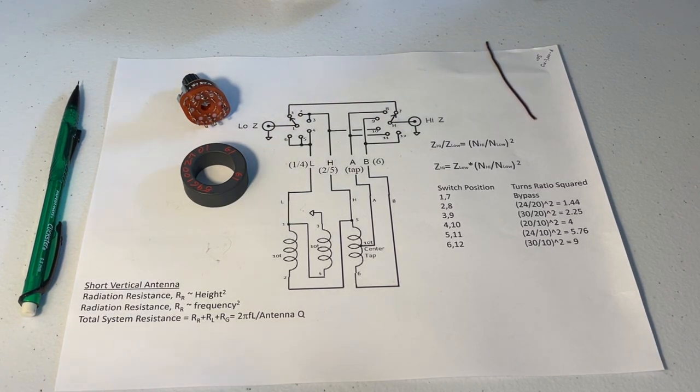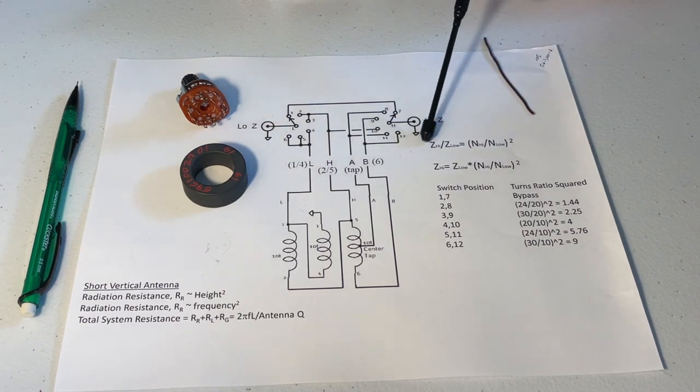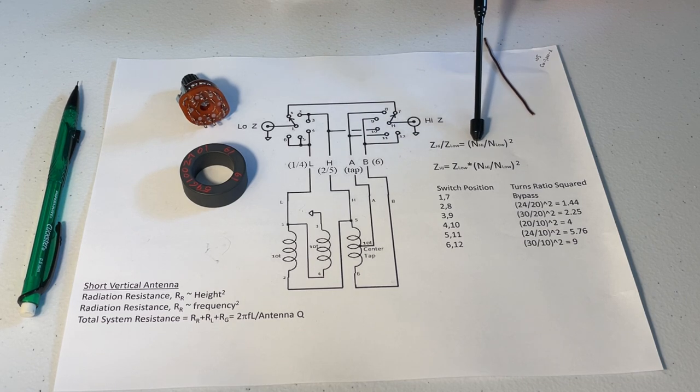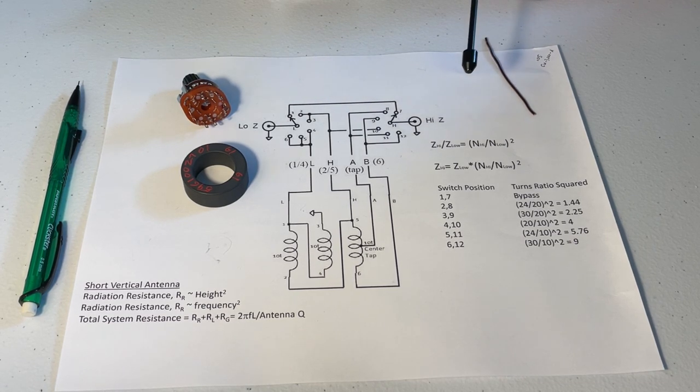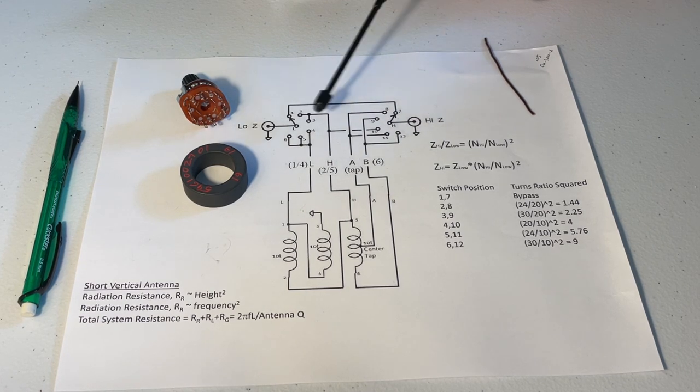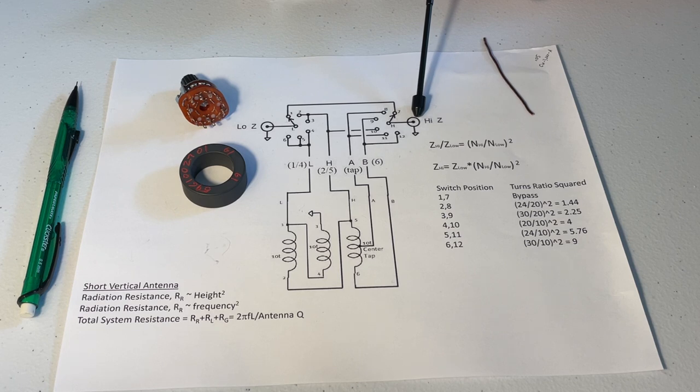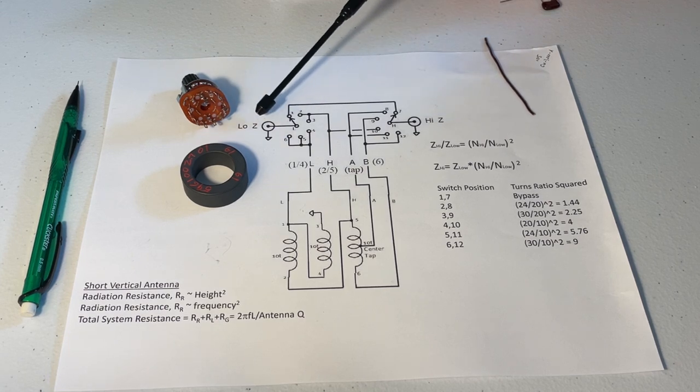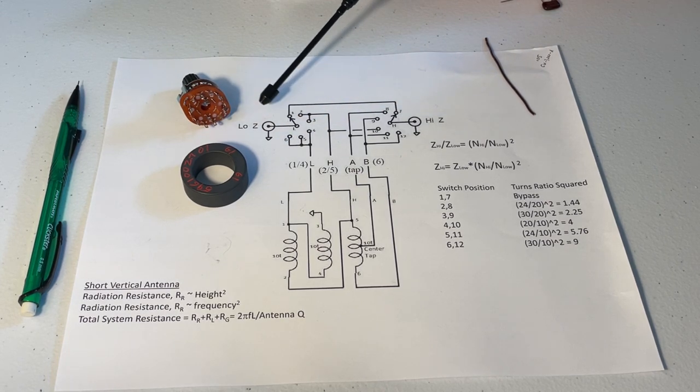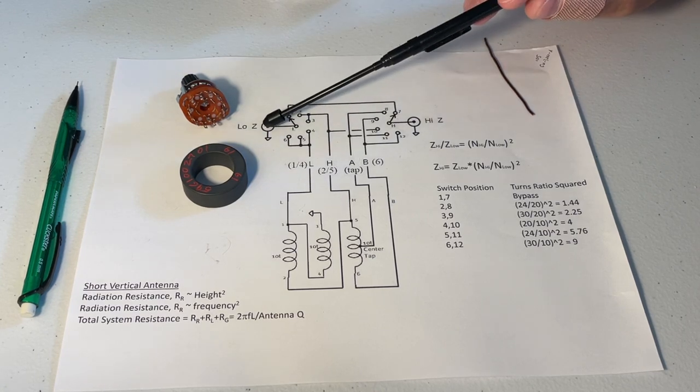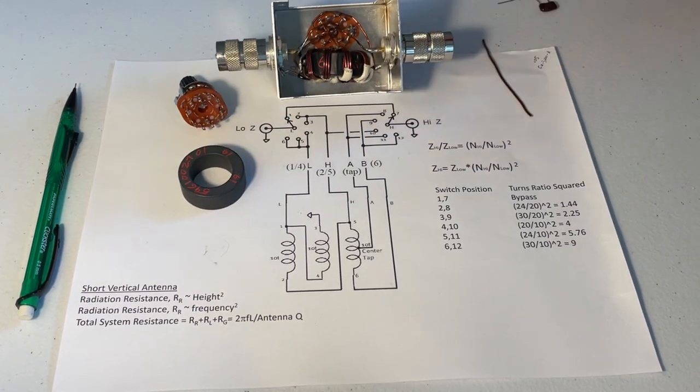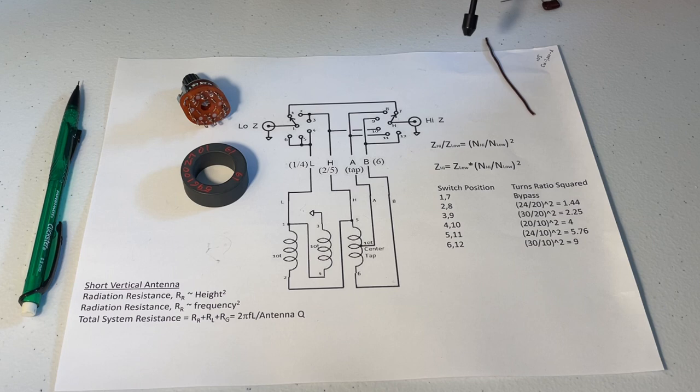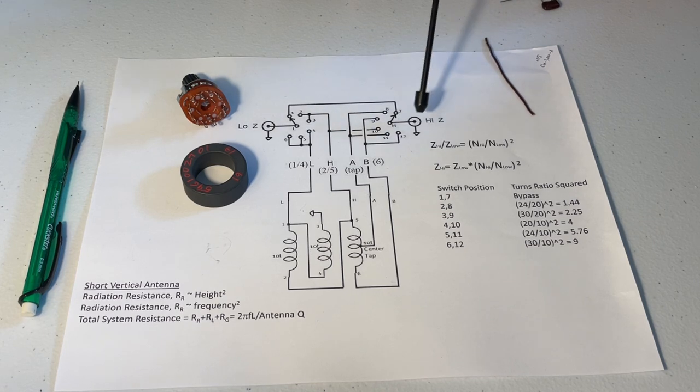So if we want to know what the impedance transformation ratio is, we know that the impedance ratio is equal to the turns ratio squared. So the impedance on the high side to the impedance on the low side is the number of turns on the high side to the number of turns on the low side squared. For instance, in position one, we're connecting this where the low impedance side of this transformer is hooked up to the antenna input, and then the high Z side will be hooked up to your coax cable, normally your 50 ohm cable going back to your radio.